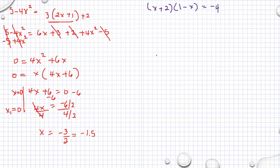Another example. We have parenthesis x plus 2 multiplied by parenthesis 1 minus x, is equal to negative 4. Many of my students have a problem with this — they always incorrectly set x plus 2 equal to negative 4, and 1 minus x equal to negative 4. That is not true. Never do it this way.